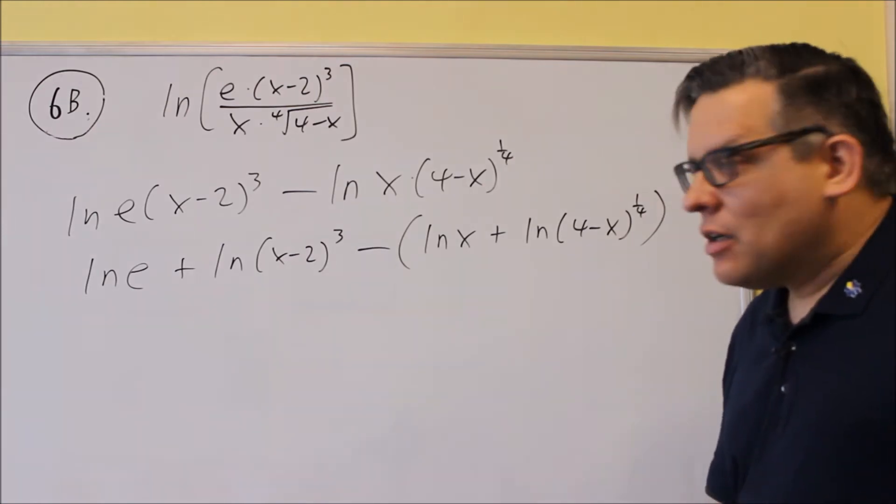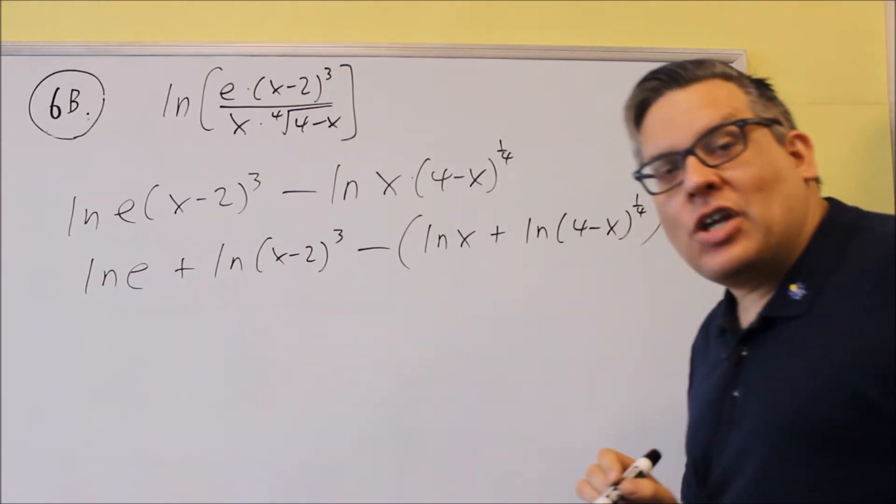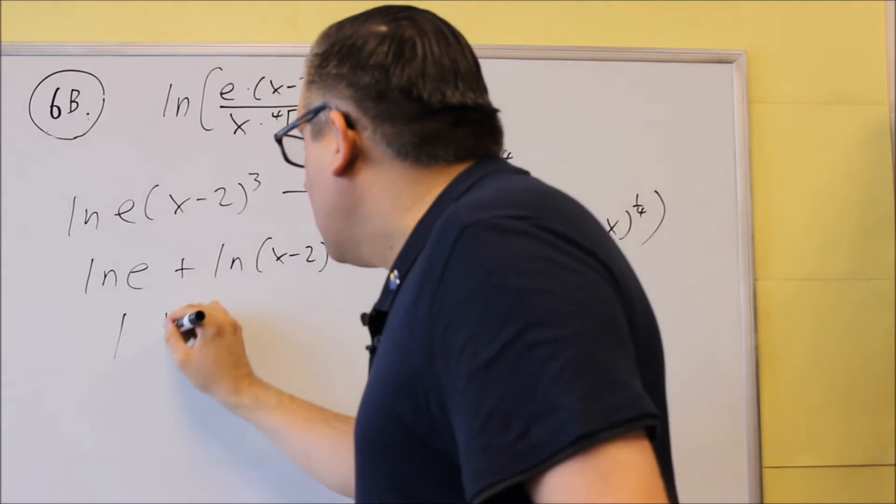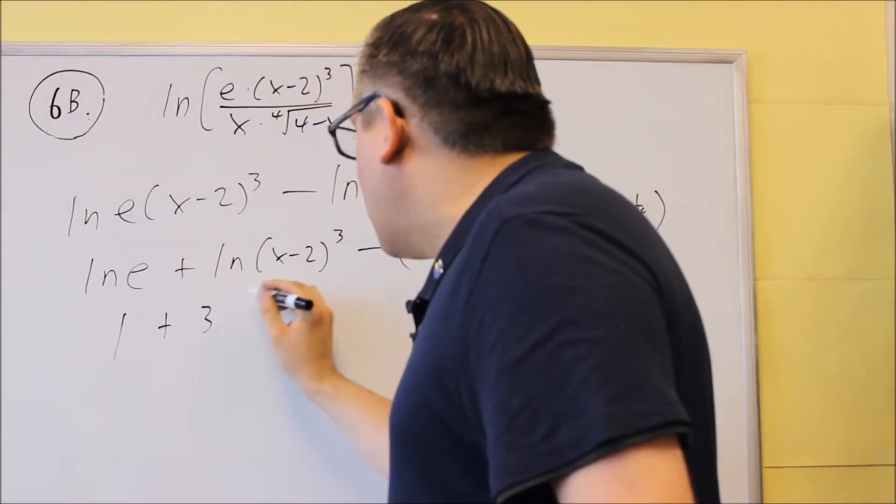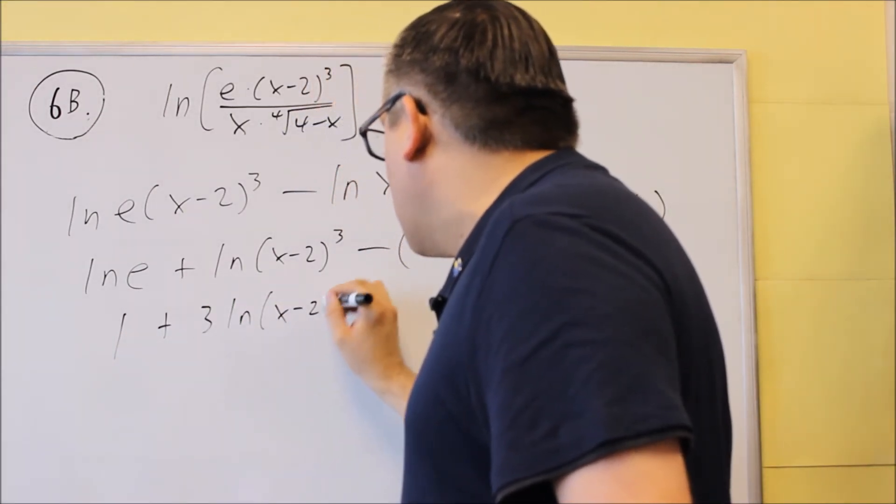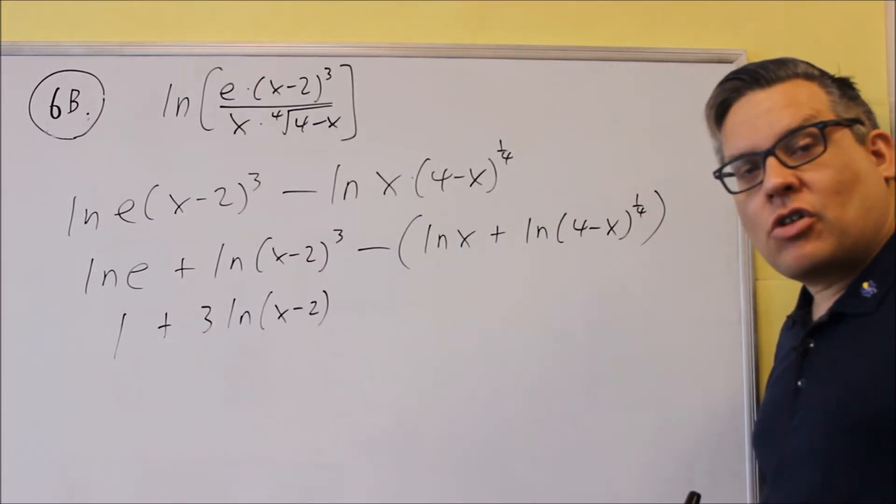So we have a natural log of e, and because it's log base e of e, that's going to turn into a 1. The next one, we can bring down the 3 in front of the natural log. So we have 3 natural log of x minus 2.